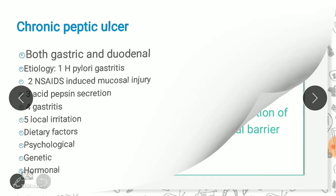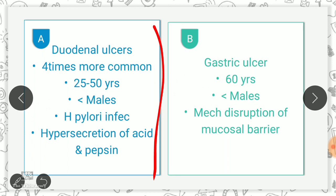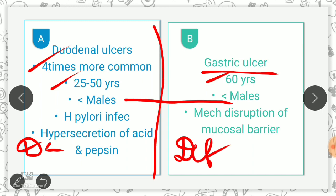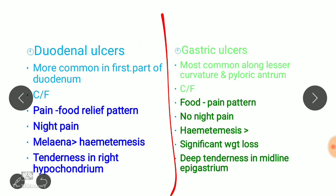Comparing duodenal and gastric ulcers: duodenal ulcers are more common, seen in middle-aged people, whereas gastric ulcers are seen in older patients around 60 years. Both are more predominant in males. Duodenal ulcers are commonly associated with H. pylori infection and involve hypersecretion of acid and pepsin. Gastric ulcers involve disruption of the mucosal barrier. Duodenal ulcers are more common in the first part of the duodenum; gastric ulcers are more common in the lesser curvature and pyloric antrum.